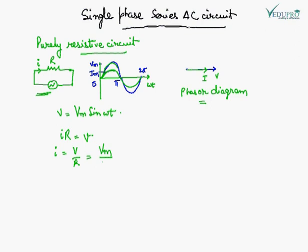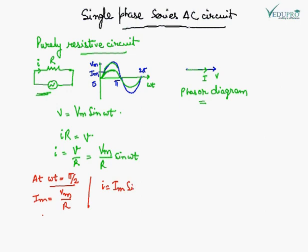Since IR equals V, the current I is equal to V upon R, which equals VM upon R times sine omega t. The current will be maximum when omega t is pi by 2, giving IM equal to VM upon R. The instantaneous current value is therefore I equal to IM sine omega t.